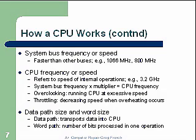System bus frequency or speed is faster than other buses — examples are 1066 megahertz or 800 megahertz. CPU frequency or speed refers to internal operations, with 3.2 gigahertz as an example. The system bus frequency times the multiplier equals the CPU frequency, so everything works off a single clock frequency. Overclocking is running the CPU at an excessive speed, which produces a lot of heat but can be done successfully. Throttling is decreasing speed when overheating occurs or when the system enters standby to reduce power. Data path is where data is transported into the CPU, and word size is the number of bits processed in one internal operation.